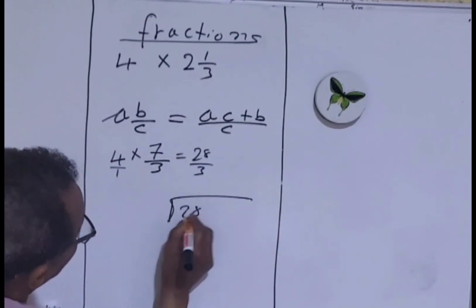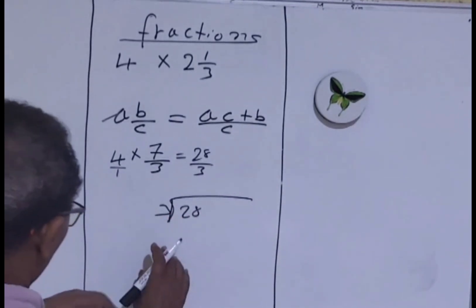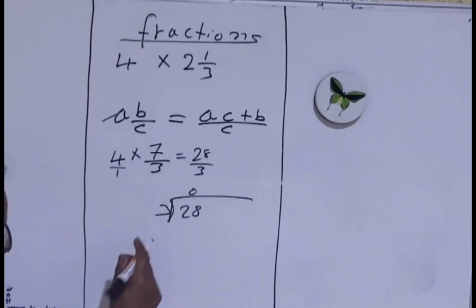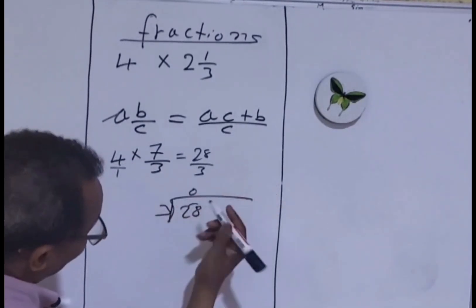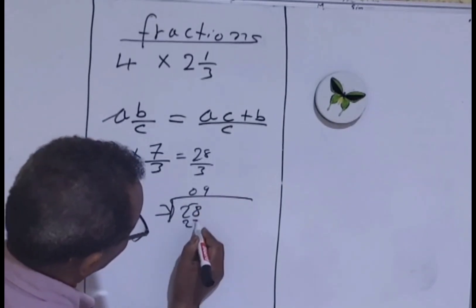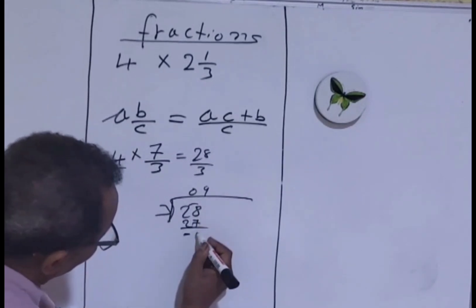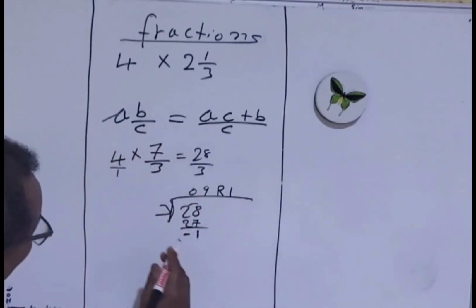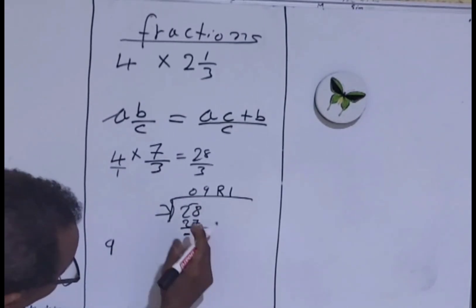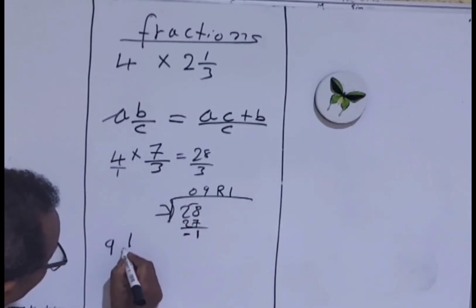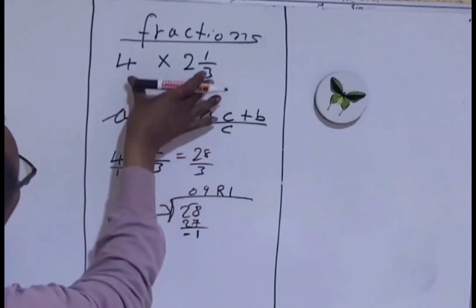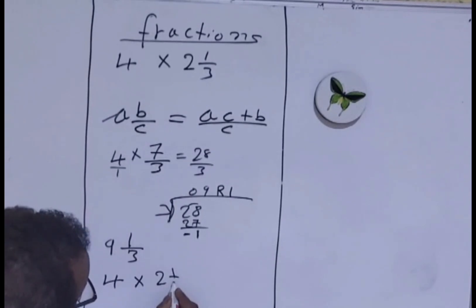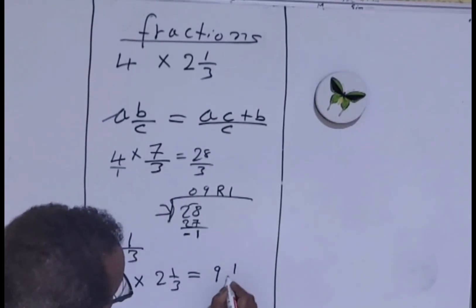Let's divide 28 by 3 to convert to a mixed fraction. 28 divided by 3: how many times does 3 go into 28? That is 9. 9 times 3 is 27, so you get a remainder of 1. So 9 is the quotient and 1 is the remainder — 1 is not yet divided, so we place it over 3. So we get 9 and 1 over 3.